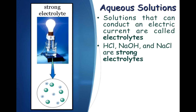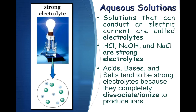When a conductivity meter is placed into a solution of an acid, base, or salt, the light bulb lights up. That's because they completely dissociate or ionize to produce ions. The presence of free ions is necessary for something to conduct electricity.